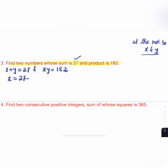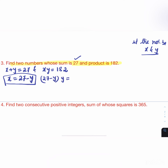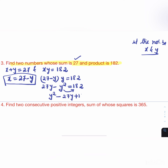From x + y = 27, we get x = 27 - y. Substituting into xy = 182: (27 - y)y = 182, so 27y - y² = 182. Rearranging: y² - 27y + 182 = 0.